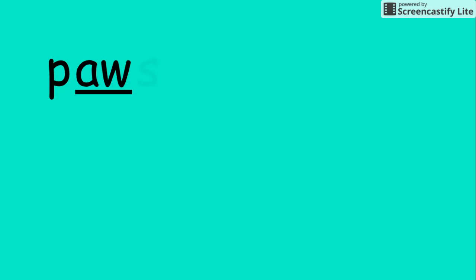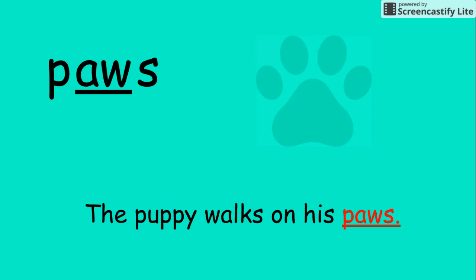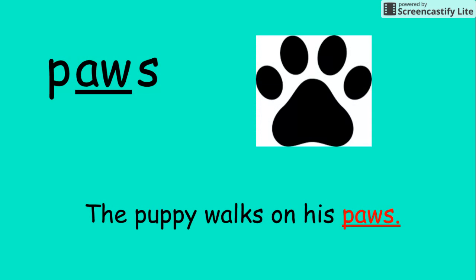P, AW, C — paws. The puppy walks on his paws. Paws.